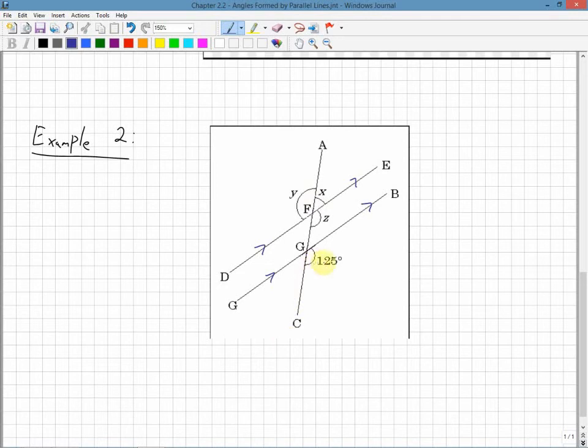I can see a corresponding angle, 125, facing that same direction as angle Z up here. So that angle there is also 125 degrees. I can see that angle Y and angle Z are vertically opposite. So this angle Y up here would also be 125 degrees.